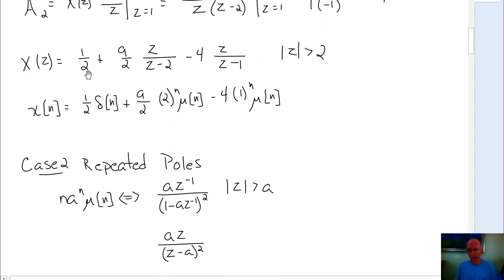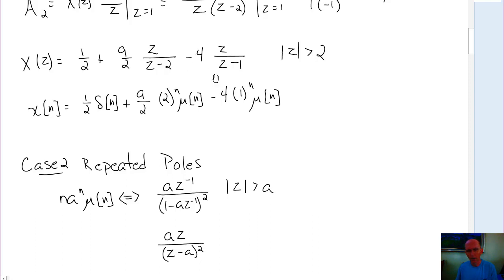So after our partial fraction expansion, X of z is expressed with those terms. We know that 1/2 has inverse 1/2 delta of n. For z over z minus 2, it has two possible inverses depending on the region of convergence. Since the region of convergence is z greater than 2, the inverse is 2 to the n mu of n, multiplied by 9/2. The minus 4 goes with z over z minus 1, and since the region of convergence is greater than the pole, we get the inverse as 1 to the n mu of n.